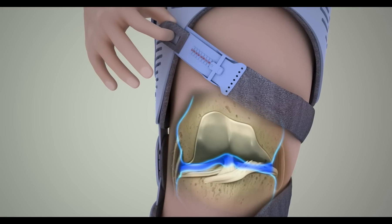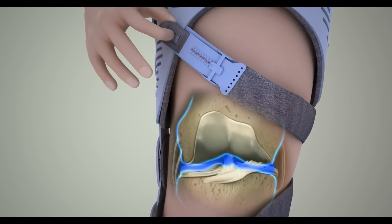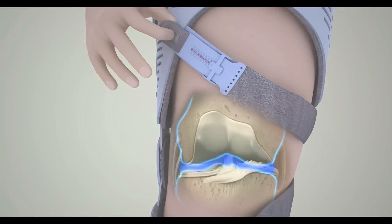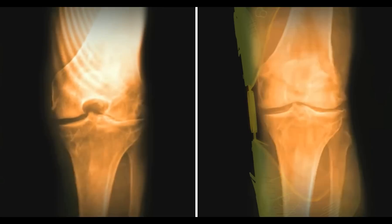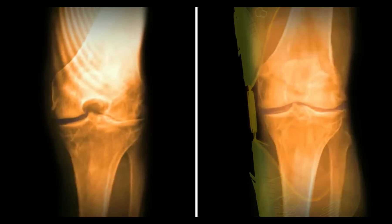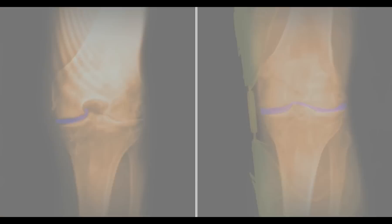The higher the number on the thumb wheel, the greater the amount of force on the knee. These before and after x-rays show how Bragg's Freestyle OA Brace affects the knee.